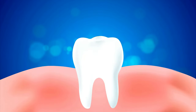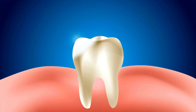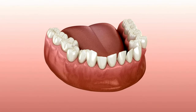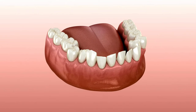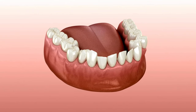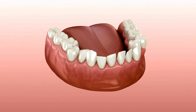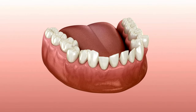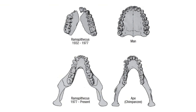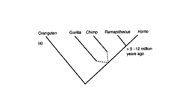Thick enamel helps teeth withstand strong bites and last longer, and reduced canines are a human trait that shapes the tooth row to form a parabola, unlike other primates. Simons believed these traits evolved only once and identified Ramapithecus as a relative of humans. This idea was widely accepted, although some argued against it.